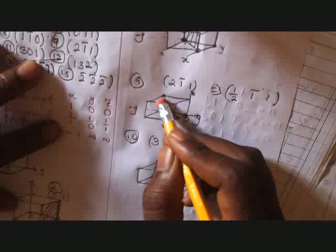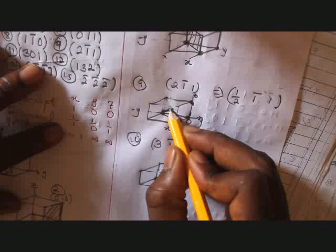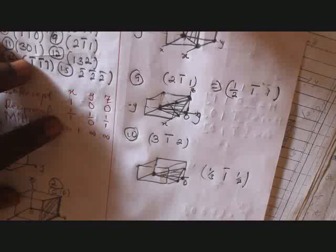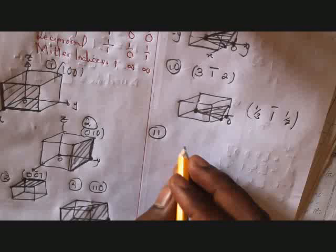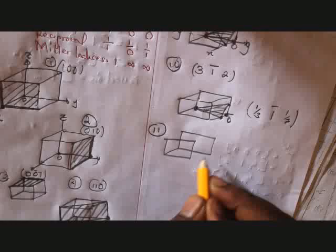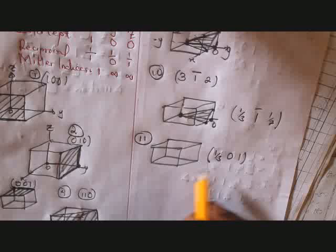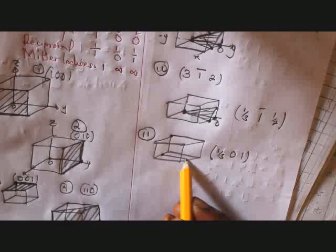Sorry, a correction was made for the previous plane. The z-intercept should be positioned like this — 1 for z, not as drawn before. For number eleven, the Miller indices give reciprocals of 1 over 3 for x, y is zero (infinity intercept), and z is 1. Take the parallel of y here.